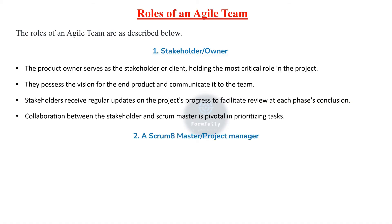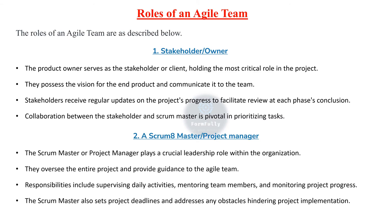Collaboration between stakeholder and scrum master is pivotal in prioritizing tasks. The second role is scrum master or project manager. The scrum master or project manager plays a crucial leadership role within the organization. They oversee the entire project and provide guidance to the Agile team. Responsibilities include supervising daily activities, mentoring team members, monitoring project progress, setting project deadlines, and addressing any obstacles hindering project implementation.